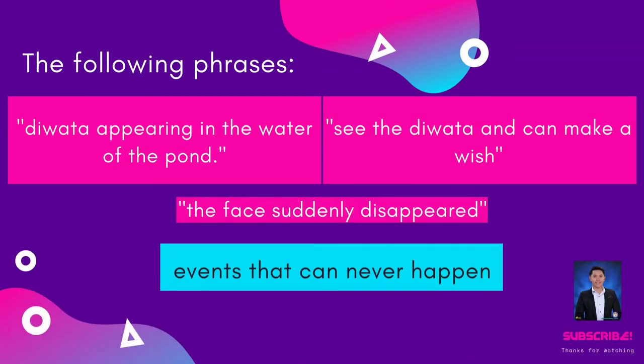Let's see these following phrases: 'Diwata appearing in the water of the pond.' 'See the diwata and can make a wish.' 'The face suddenly disappeared.' These are the events that can never happen in real life.